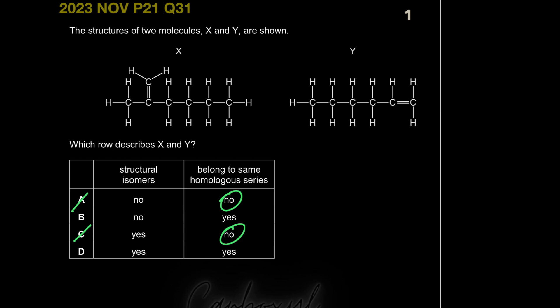Molecule X has seven carbons — it's a seven-carbon alkene, C7H14. Molecule Y has six carbons, so its molecular formula is C6H12. Although they have different structures, you can't call them isomers because the first condition — same molecular formula — is not fulfilled. So they are not structural isomers, and B is the correct option.